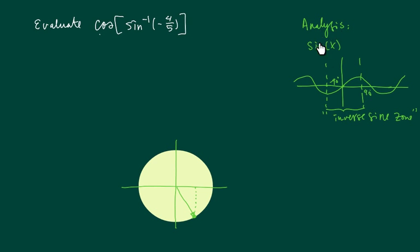The analysis for this problem looks something like this. Here's step one. We start with sine x because here we have an inverse sine. So the base function is sine. Sine function looks something like this.